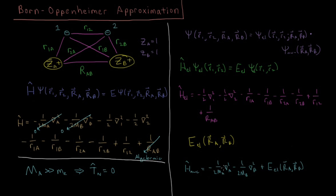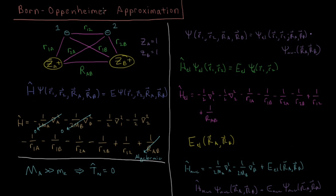We also have a nuclear wave function: H_nuke acting on ψ_nuke(R_A, R_B) equals the nuclear energy times ψ_nuke(R_A, R_B). If we want to go back and solve for nuclear wave functions on the potential energy surface created by the electrons, we can do so. Often, though, the nuclei are treated as classical particles, giving rise to the standard molecular potential energy surface. A potential energy surface requires the Born-Oppenheimer approximation — without assuming nuclei are fixed relative to electrons and that electrons relax much faster, concepts like potential energy surfaces don't apply.